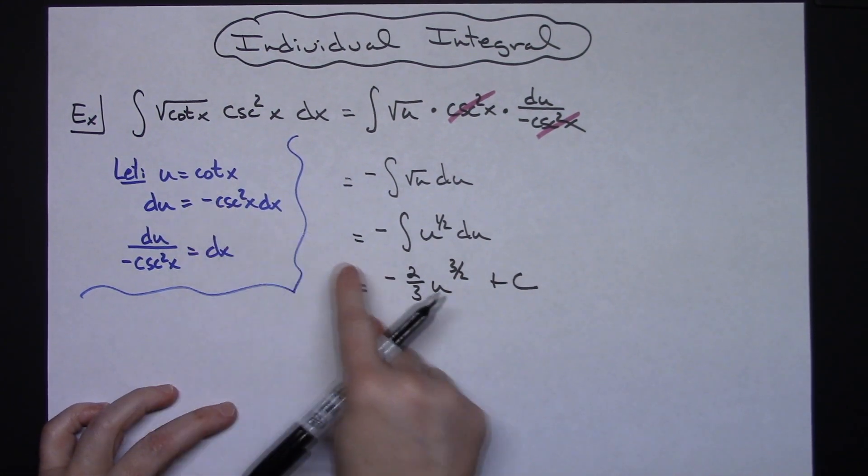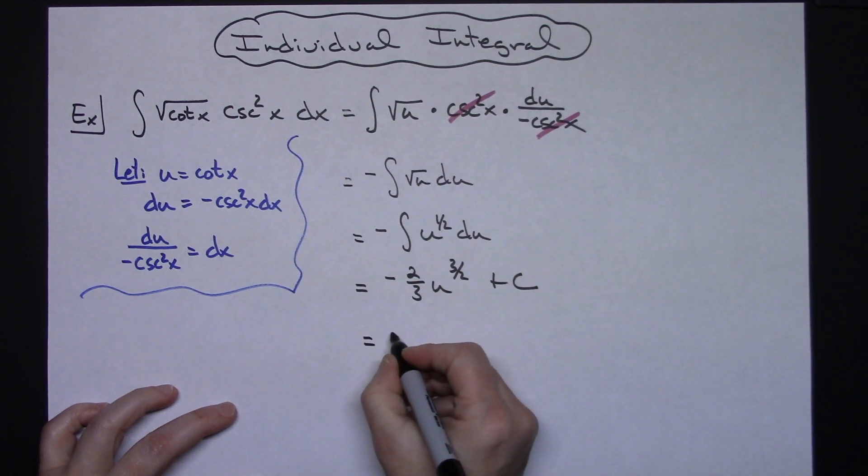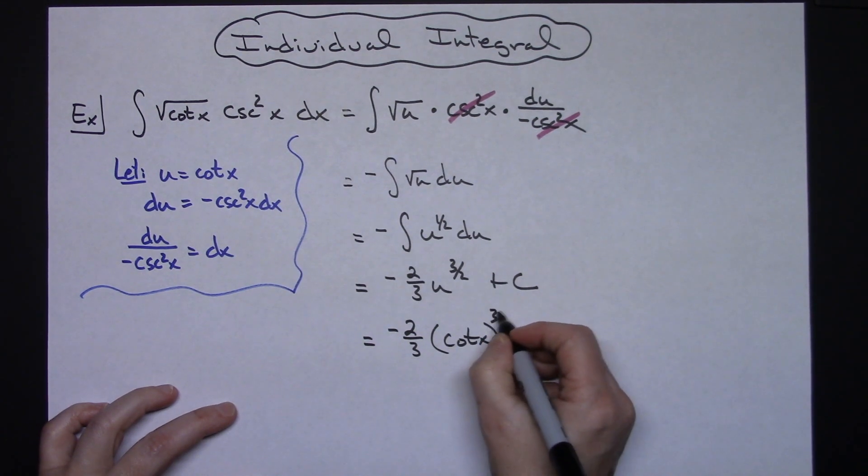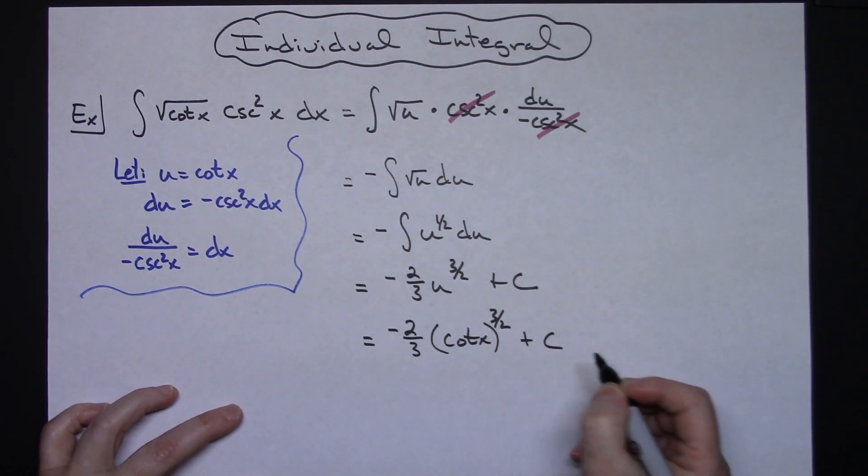Last step we can replace that u with what we originally let it equal. So negative 2 thirds times the cotangent of x raised to the 3 half powers plus c.